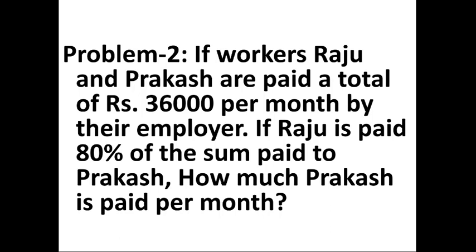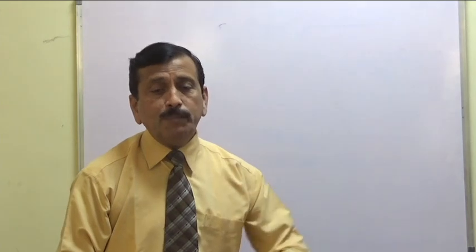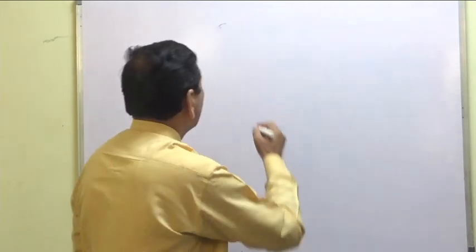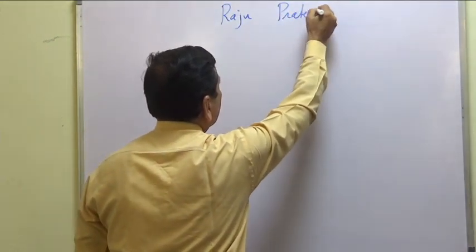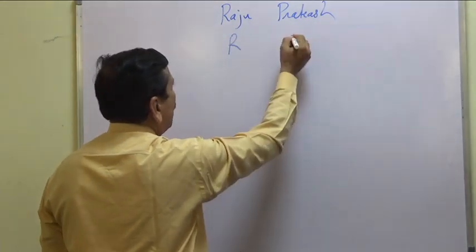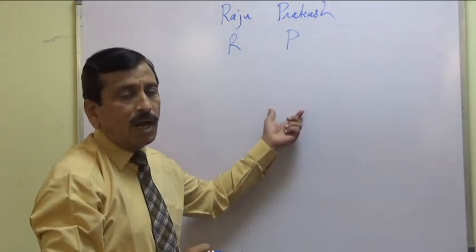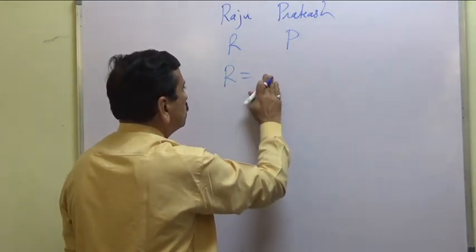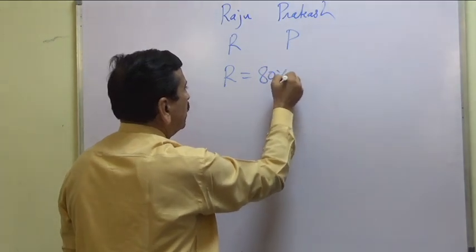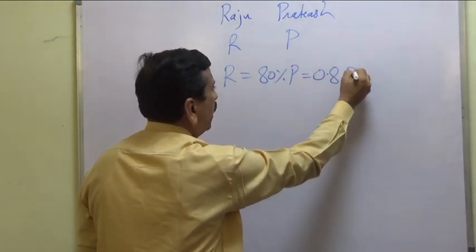Workers Raju and Prakash are paid a total of rupees 36,000 per month by their employer. Raju is paid 80 percent of the sum paid to Prakash. How much is Prakash paid per month? Let the salary of Raju be R and salary of Prakash be P. Raju is paid 80 percent of Prakash, so R equals 0.8P. This is equation 1.